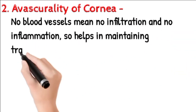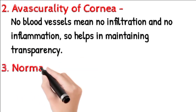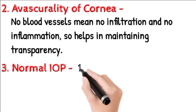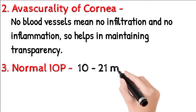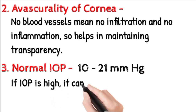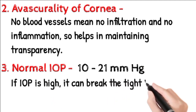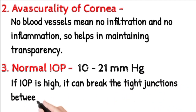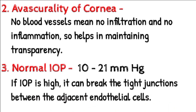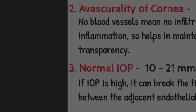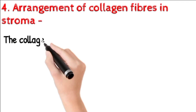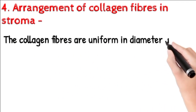Next we will talk about the normal intraocular pressure. The normal range of intraocular pressure is 10 to 21 millimeters of Hg. If the intraocular pressure is high, it can break the tight junctions between the adjacent endothelial cells, making the cornea hazy, thus disrupting the transparency.